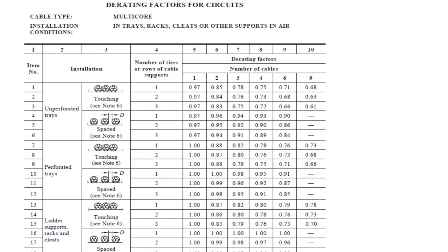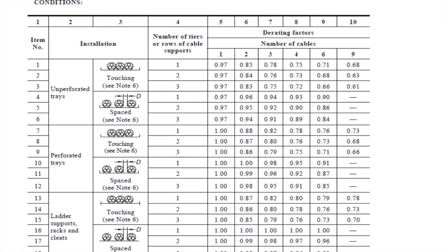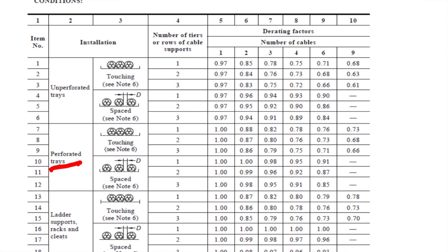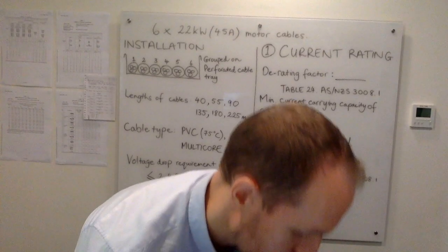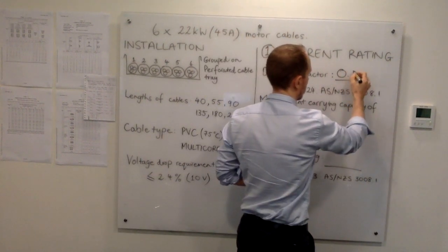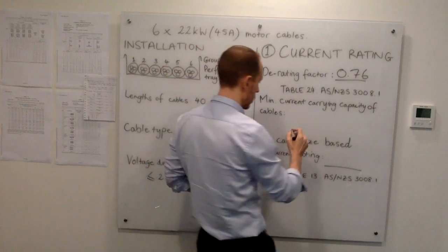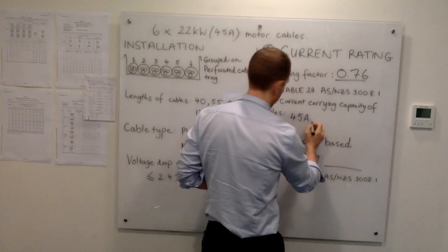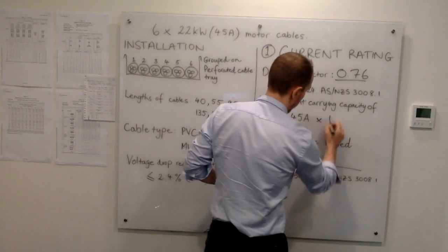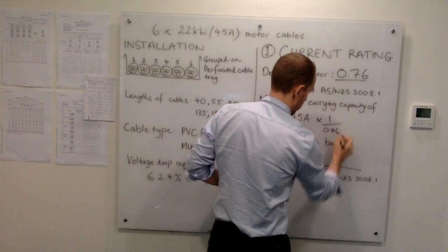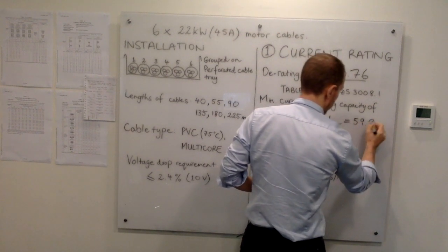This is table 24. We're using perforated trays, cables will be touching, number of tiers is one, and we've got six cables grouped. Therefore, we're going to use a derating factor of 0.76. The minimum current capacity of the cables required is 45 amps multiplied by 1 over 0.76, which is 59.2 amps.